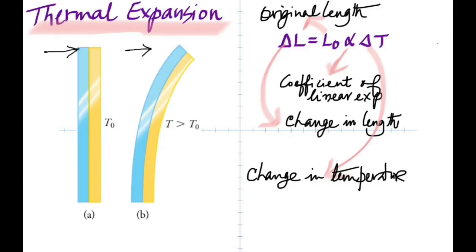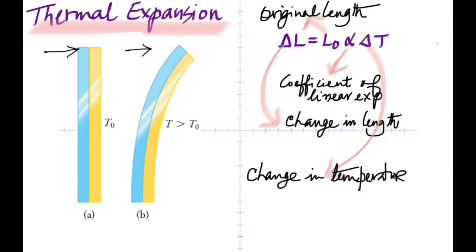If you cool the bimetallic strip below the reference temperature, which one contracts more? The one that expands more always contracts more — that's a law of nature. Therefore it will bend the other way.